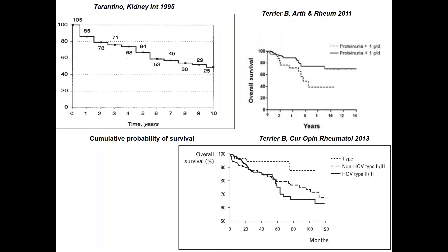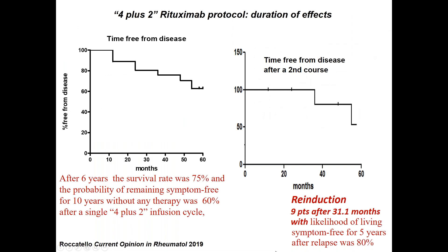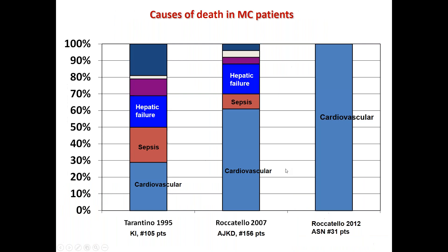Historically, survival in patients with cryoglobulinemia was dramatically reduced after years of disease. In the rituximab era, after six years of follow-up, the survival rate was 75%, and the probability of remaining symptom-free for 10 years without any other therapy after a single 4+2 infusion cycle of rituximab was approximately 60%. The likelihood of living symptom-free for five years after relapse was again 80%. Reinduction with rituximab in nine relapsing patients was again effective. Hepatic failure and sepsis are no longer causes of death.